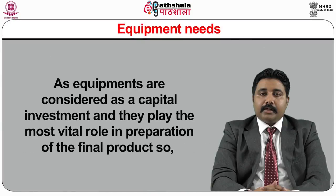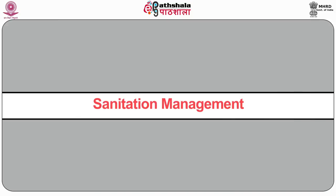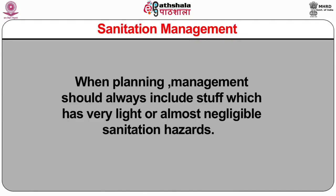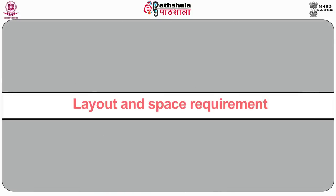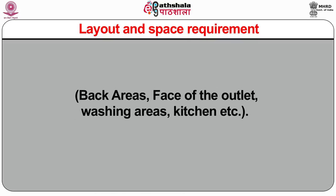Equipment needs: as equipment is considered a capital investment and plays the most vital role in preparation of the final product, one should choose equipment by thoroughly going through the menu. Sanitation management: when planning, management should always include items which have very light or almost negligible sanitation hazards. Layout and space requirements: as one plans the layout of the outlet, one should be aware of minimum and maximum space requirements including back areas, front of outlet, washing areas and kitchen areas.